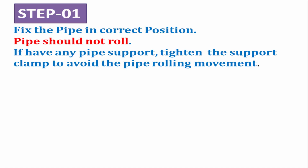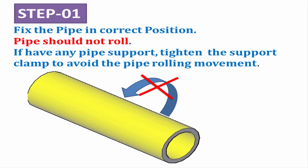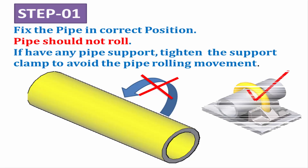Step 1: Fix the pipe in the correct position. The pipe should not roll. If there is any pipe support, tighten the support clamp to avoid the pipe rolling movement.